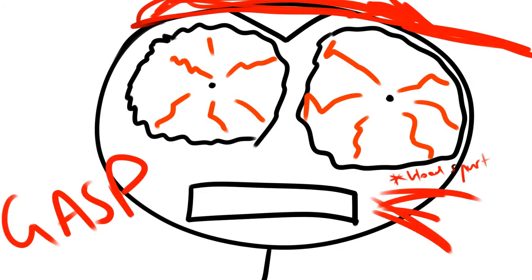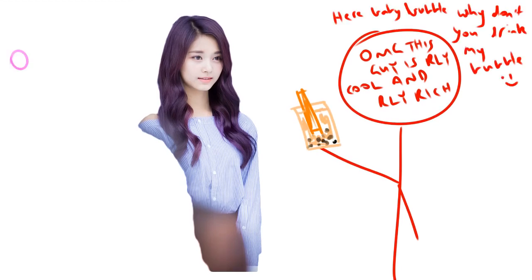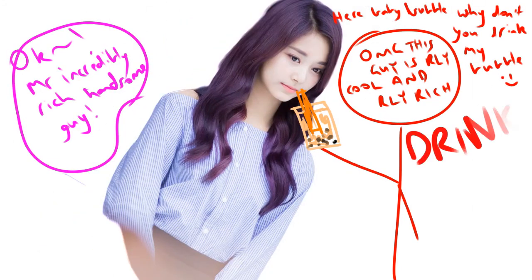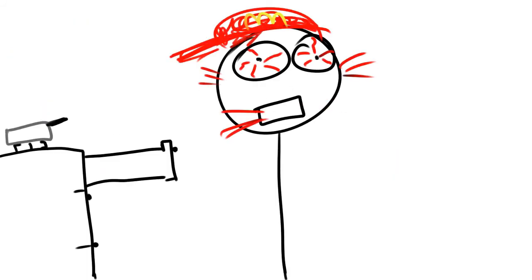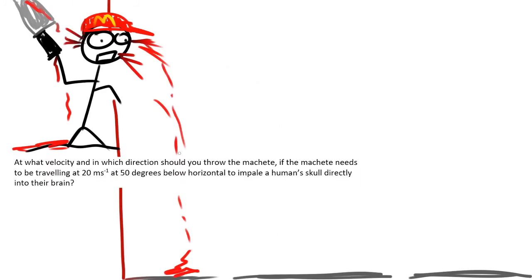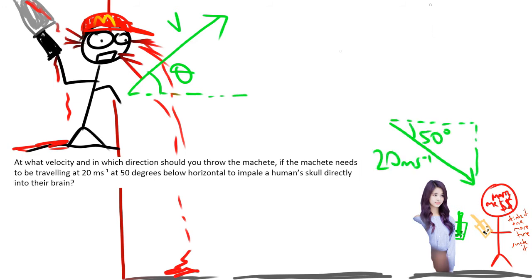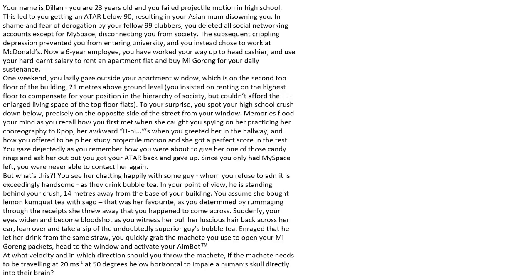Suddenly, your eyes widen and become bloodshot as you witness her pull her luscious hair back across her ear, lean over, and take a sip of the undoubtedly superior guy's bubble tea. Enraged that he let her drink from the same straw, you quickly grab the machete you used to open your migoreng packets, head to the window, and activate your aimbot. At what velocity and in which direction should you throw the machete? The machete needs to be travelling at 20 meters per second at 50 degrees below horizontal to impale a human skull directly. So let's apply.